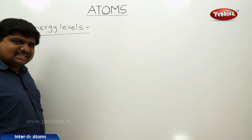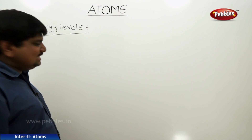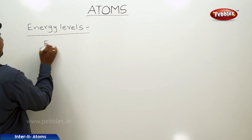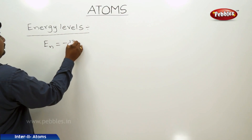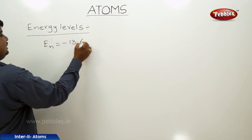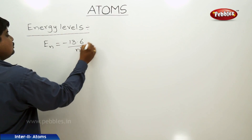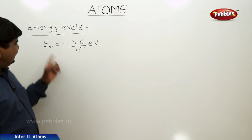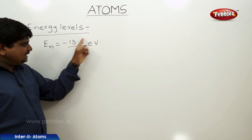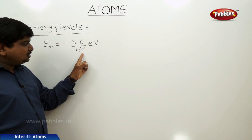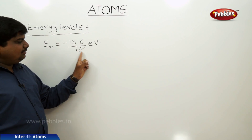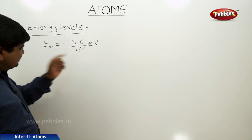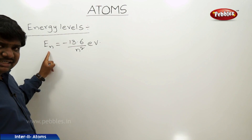The next concept we are going to discuss is energy levels. We have an equation: En is equal to minus 13.6 over n squared eV. The energy of an orbit is inversely proportional to the level or number of the orbit, so if n is increasing, energy will decrease.